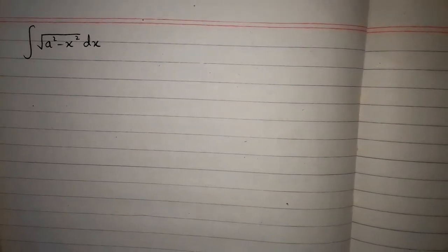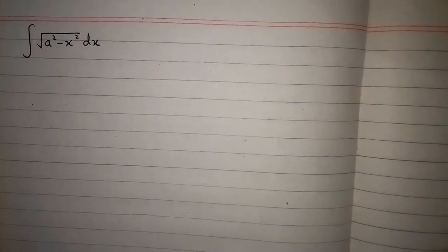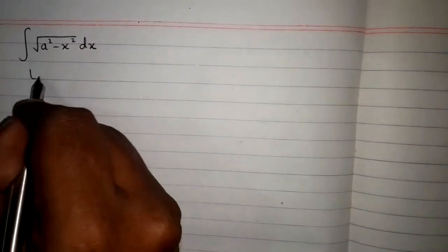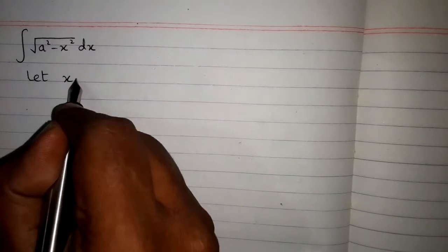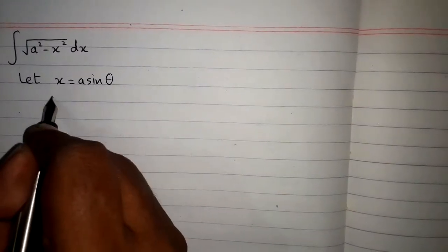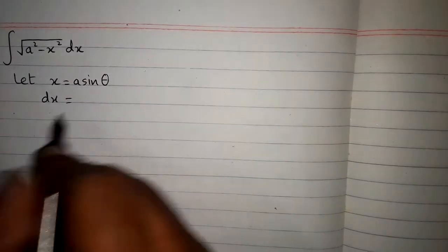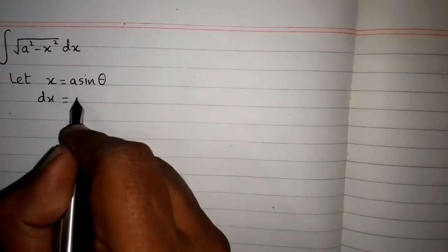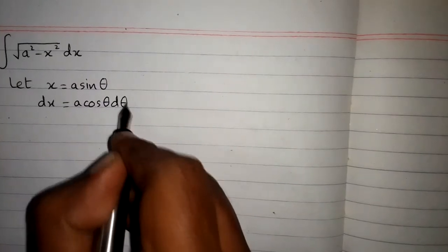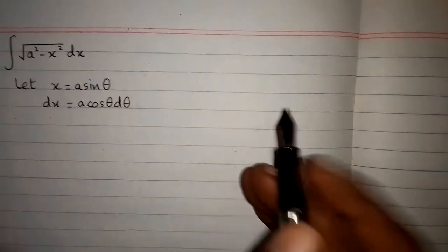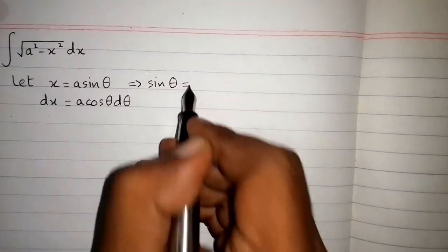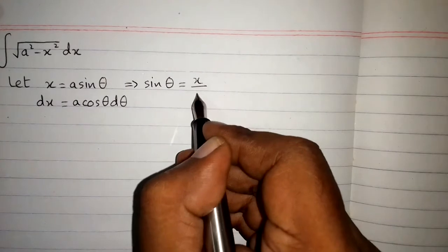In this video we will find the integral of square root of a squared minus x squared. First of all, let x equal a sine theta, and the differential dx is equal to the derivative of a sine theta, which is a cosine theta d theta. We can find the value of sine theta, which is x upon a.